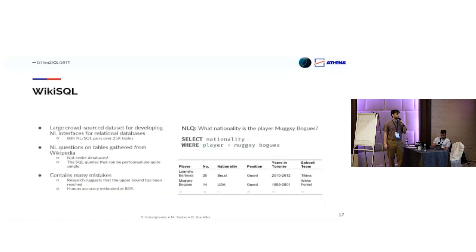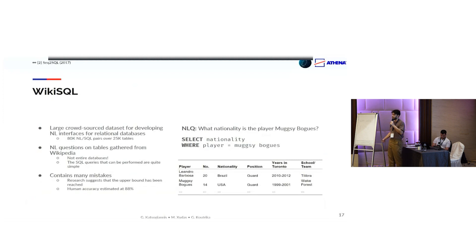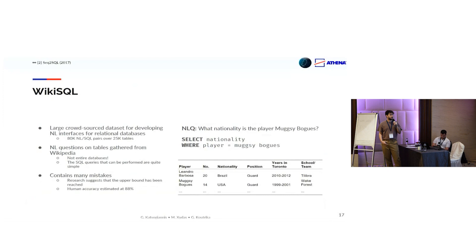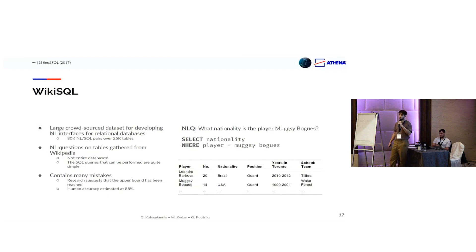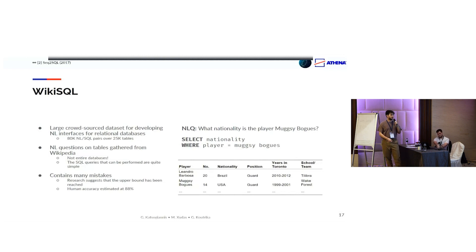On one hand, we have the WikiSQL dataset, which is a large crowdsourced dataset crawled from Wikipedia. Tables were extracted and the questions and SQL queries were crowdsourced. It is important to note that this dataset does not contain full relational databases but only single tables, and as a result the SQL queries are rather simple. Because it was crowdsourced, it contains many mistakes. In fact, research has shown that human accuracy, even from experts, can only score about 88% on this dataset, which shows that it has a lot of mistakes and ambiguities.